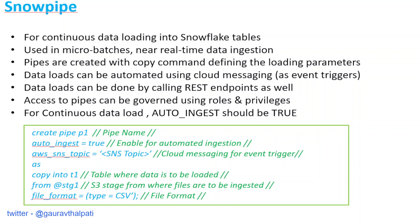Like any other Snowflake object, pipes are governed using roles and privileges so you can enforce proper access control. You can also monitor pipe usage — there are views in the account usage schema where you can check how many files were loaded and how long it took. In summary, Snowpipe is Snowflake's solution for continuous automated data loading, eliminating the need for an external ETL tool for such use cases.